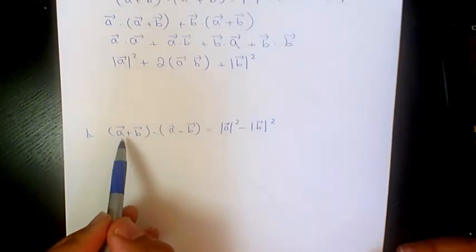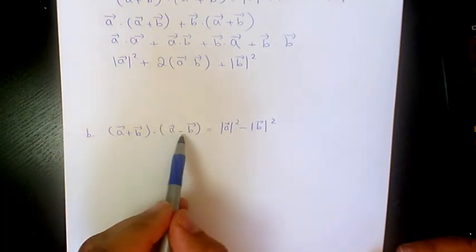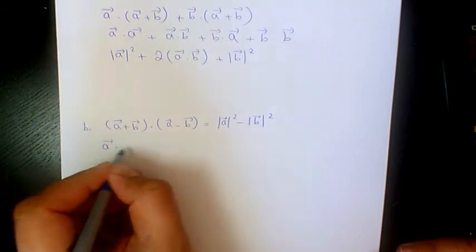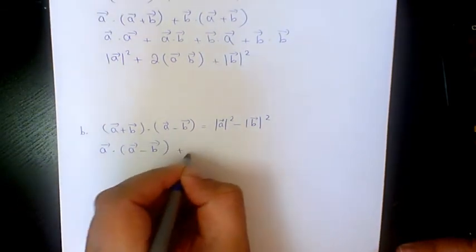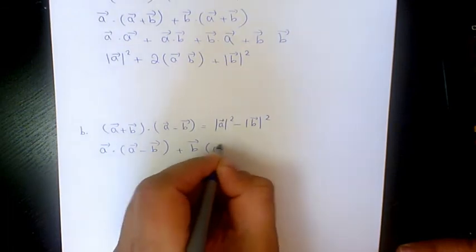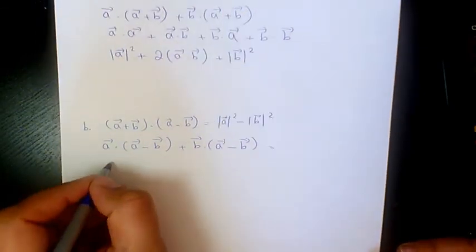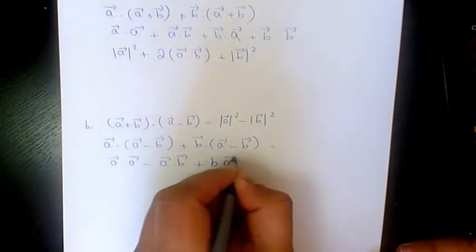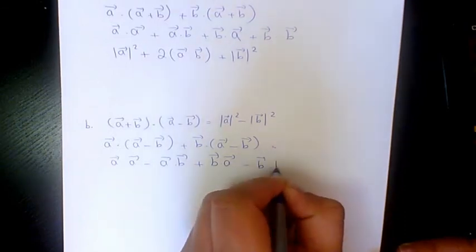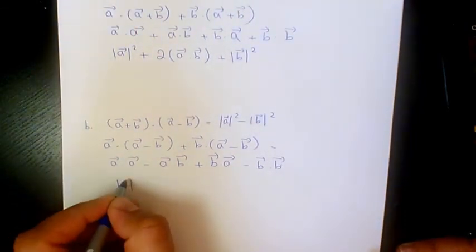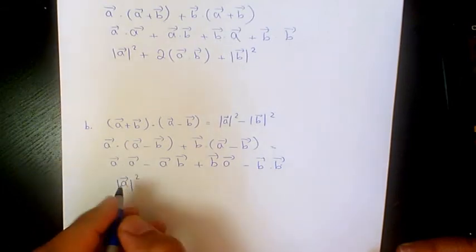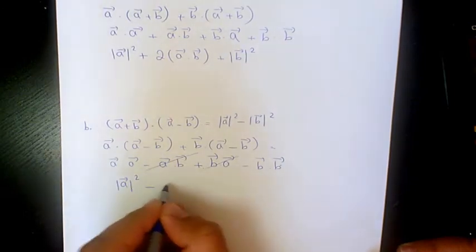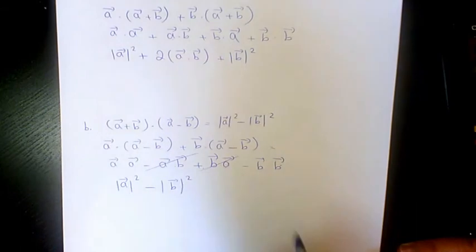Next: prove that (a plus b) dot (a minus b) equals |a|² minus |b|². Expanding: a dot a minus a dot b plus b dot a minus b dot b. The middle terms cancel since a dot b and b dot a are equal and opposite in sign, leaving |a|² minus |b|².